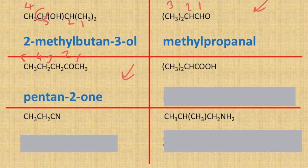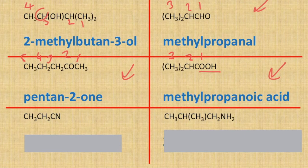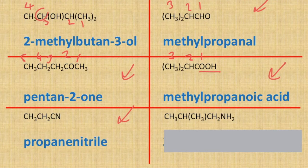Moving on to our carboxylic acid here with the COOH — again you have a methyl group coming off carbon number two there — so this is going to be methylpropanoic acid. The final couple for this page: we have got a nitrile here, so three carbons gives us propanenitrile — nice and easy.